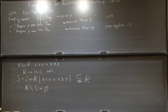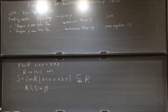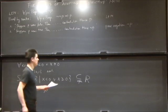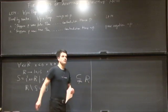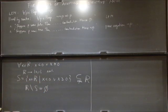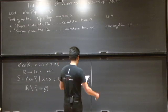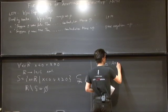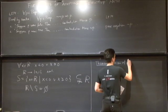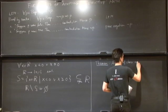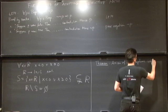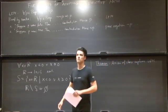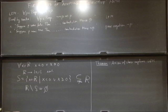Now I'm going to do one proof carefully so you see what happens. If we're going to give up the law of excluded middle, we also have to give up the axiom of choice, because there is a theorem by Diakonescu which says the axiom of choice implies the law of excluded middle. I want to do this proof slowly so you see where you have to pay attention.